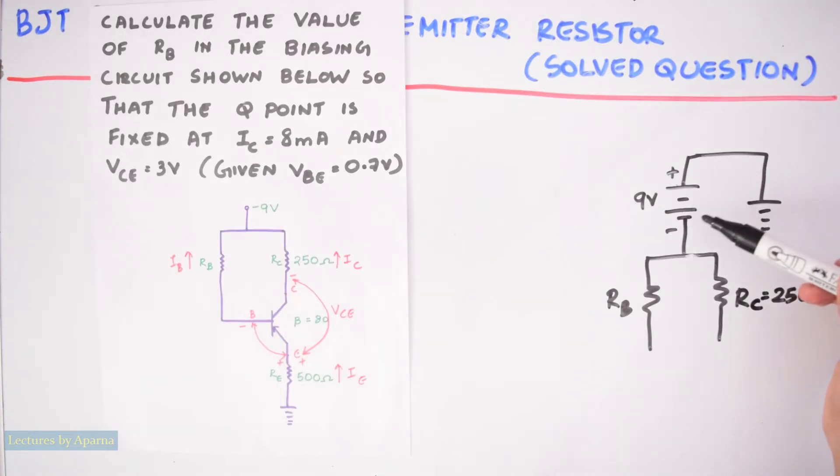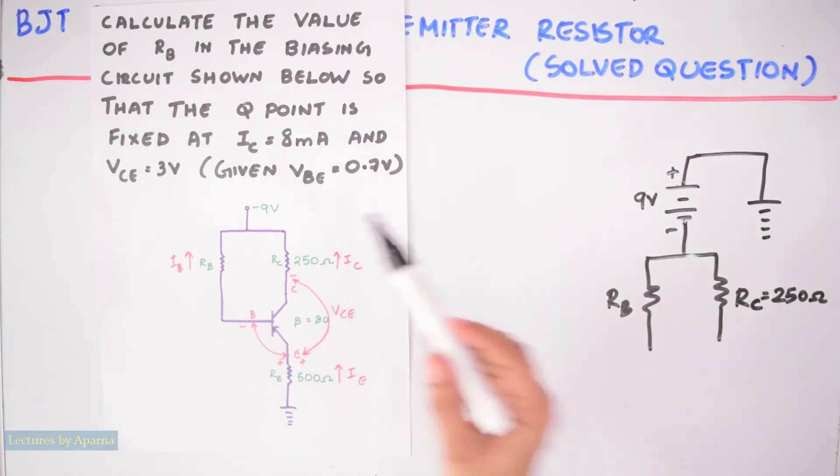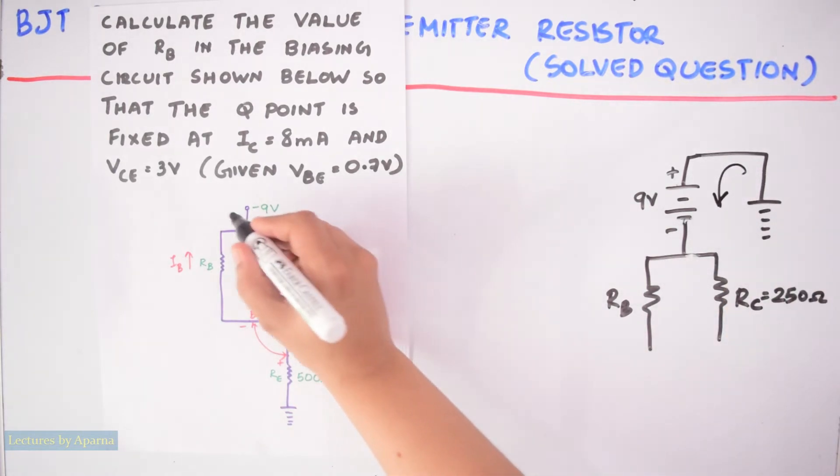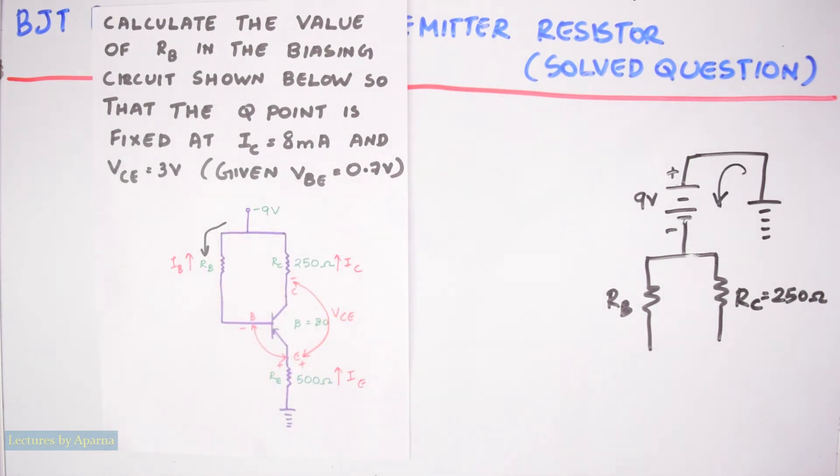So starting from here this connection is actually like this. Here negative terminal of the battery is connected to RB and RC. That is why it is shown as minus 9 volt because it is this negative terminal that is connected to RB and RC. So we have to start analyzing from here.